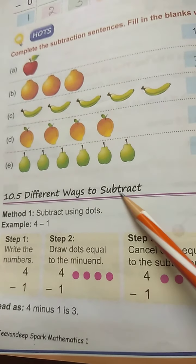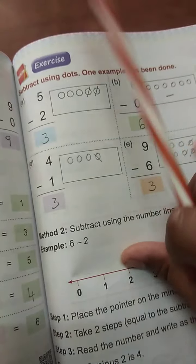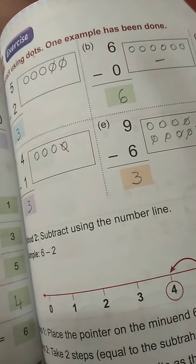Next, different ways to subtract. So different ways to subtract. First way: subtraction using dots. One example has been done.